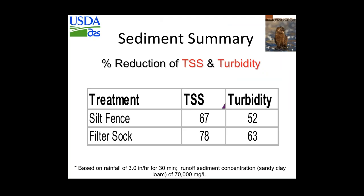A USDA Agricultural Research Service study, also published in the Journal of Soil and Water Conservation, compared filter sock to silt fence specifically looking at the suspended solids and turbidity fraction — the hardest portion of runoff to reduce because it stays in suspension. The filter sock reduced suspended solids and turbidity significantly better than the silt fence, as shown in the percentage figures in the table.